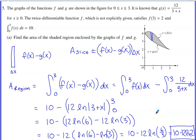So here's a discussion of number five from the 2023 AP Calc BC exam. In this question, they tell us we've got two functions, f and g. They give us the graph of f and g, shown on the interval zero to three.